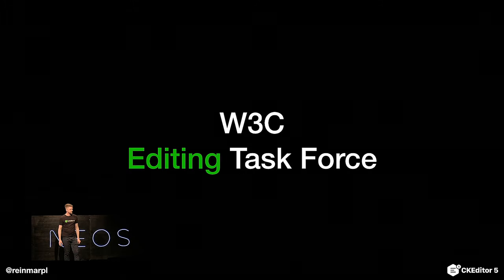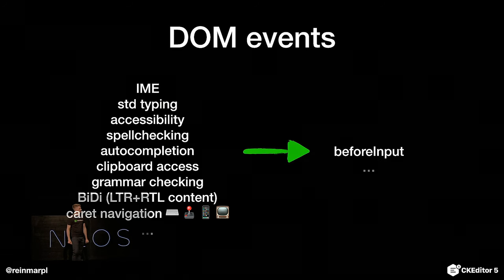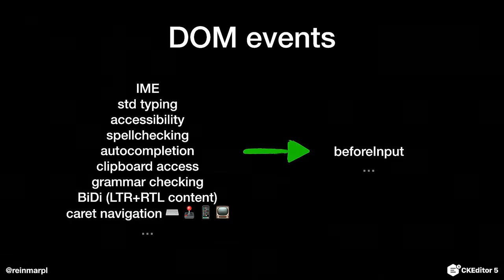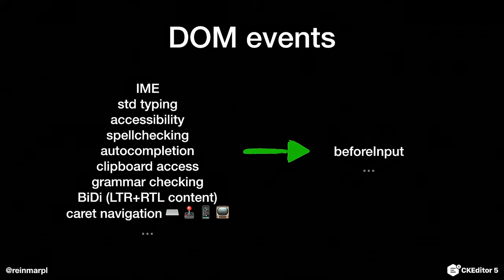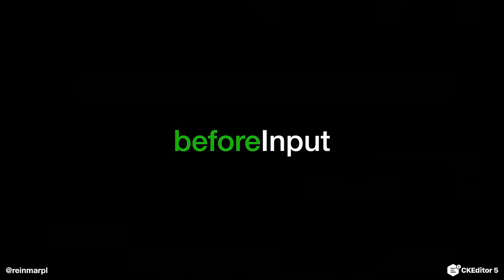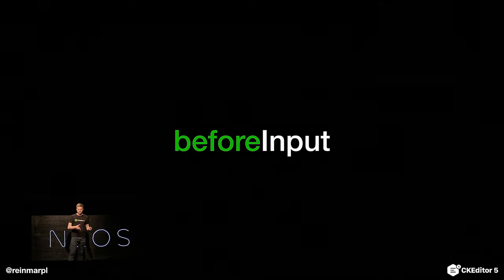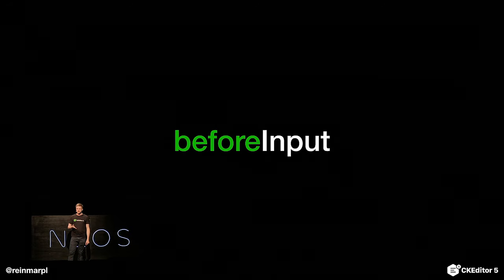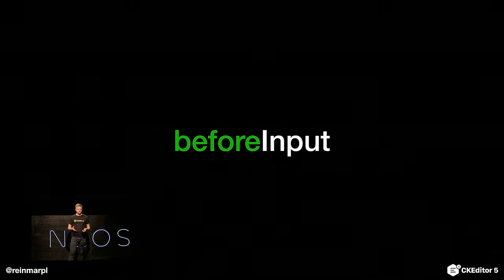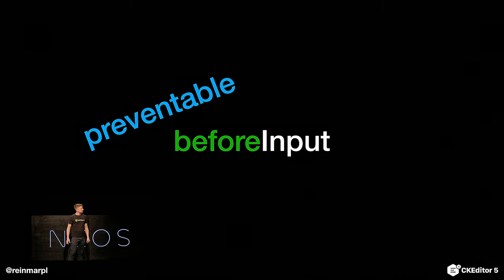So we started thinking in W3C about what we could do, how we could improve it. We designed this beforeinput event, which is meant to contain more semantical information about what the user did, so we don't have to guess anymore. The life would be so much easier with it. But then we get to the rendering part. Who's responsible for rendering? It's the editor. So who shouldn't touch the DOM? The browser shouldn't. For this event to be really useful, it would have to be preventable — we should be able to tell the browser not to change the DOM.